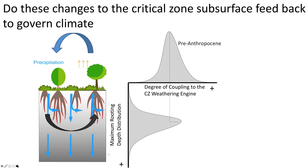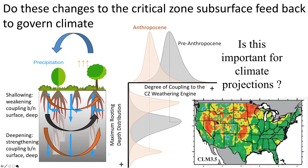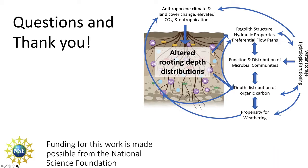Do these changes to the critical zone subsurface feed back to govern climate? Pre-Anthropocene, we had one rooting network and a hydrologic cycle operating in one manner. Moving into the Anthropocene, in some places we've shallowed our roots, in others deepened them. We can ask: what does that rooting depth distribution mean for the degree of coupling to our atmosphere and to the critical zone weathering engine? We might theorize that as we change those rooting depth distributions, we actually shift the degree of coupling between our atmosphere and that weathering engine — and this may be important for climate projections.